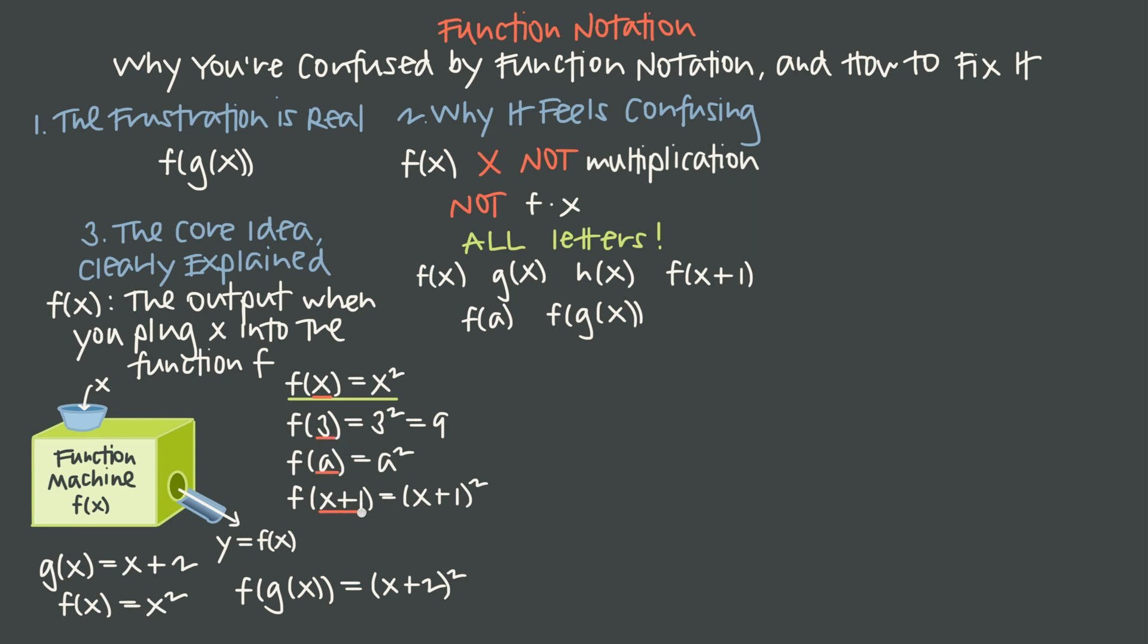in the same way here that we said x was an input, 3 was an input, a was an input, x plus 1 was an input. Here we're saying g of x is the input, which means we take g of x, which is x plus 2,